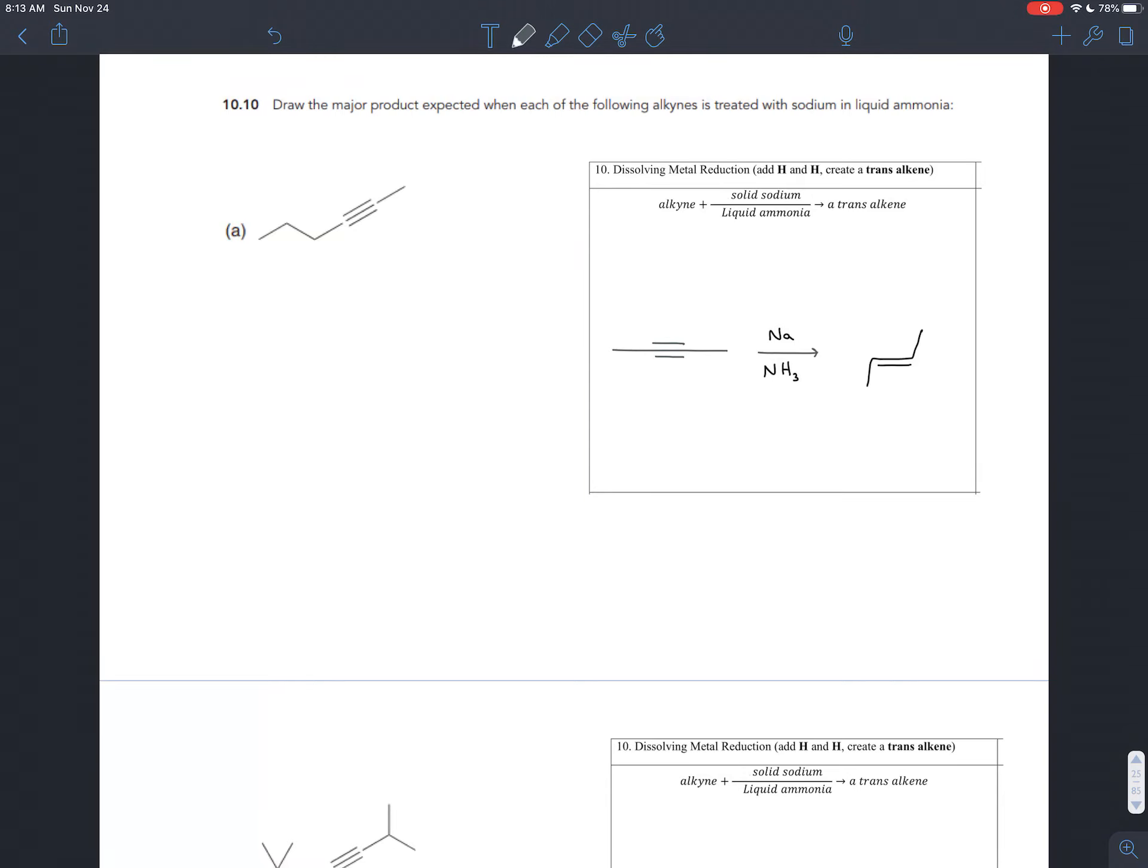Exercise 10.10 is giving you several alkynes and asking you what happens when you treat those alkynes with solid sodium and liquid ammonia. That's the recipe for dissolving metal reduction.